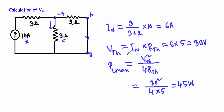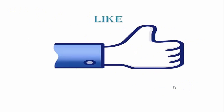We calculate VTH = IN × RTH, where IN = 6 amperes and RTH = 5 ohms, giving VTH = 30 volts. Now we calculate the maximum power delivered to the load: PL max = VTH² / (4 × RTH) = 30² / (4 × 5) = 900 / 20 = 45 watts.